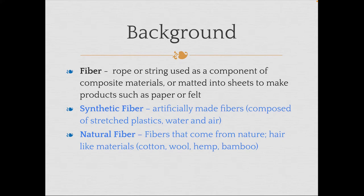Fibers can be broken down into two main types: synthetic fibers and natural fibers. Synthetic fibers are artificially made, composed mostly of stretched plastics, water, and air — made by people in factories. A lot of us are wearing synthetic fiber clothes today. If you look at the tag on the inside of your clothes, it lists what fibers that article of clothing is made from. Things like rayon, polyester, spandex, and lycra are all made of synthetic fibers.